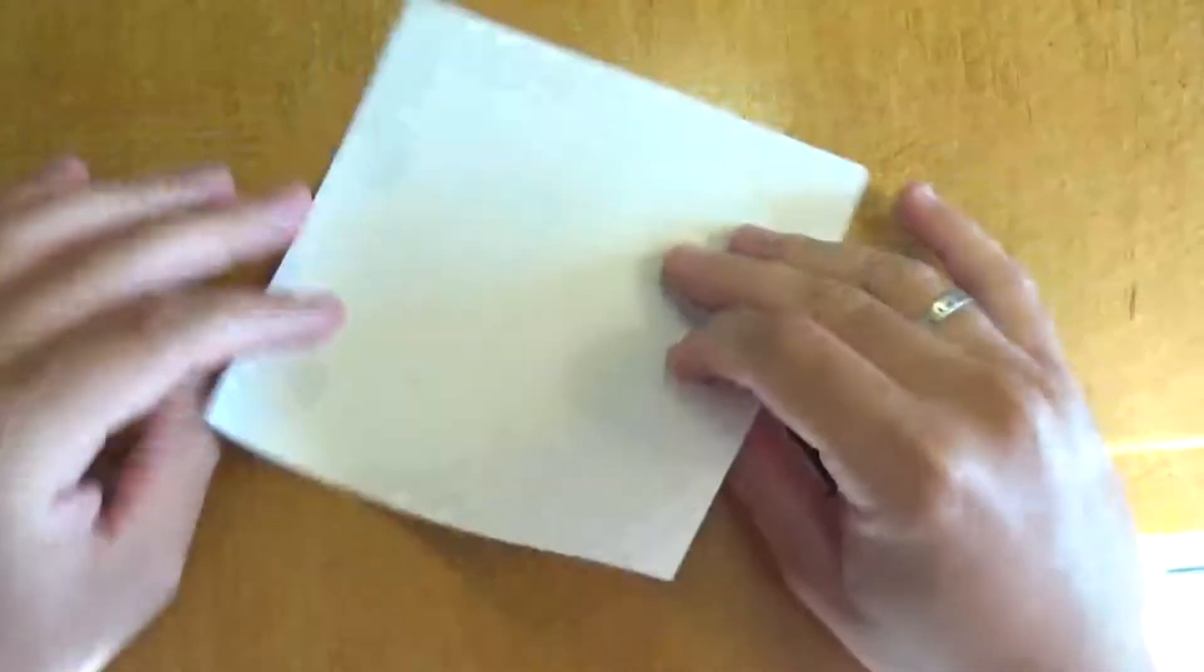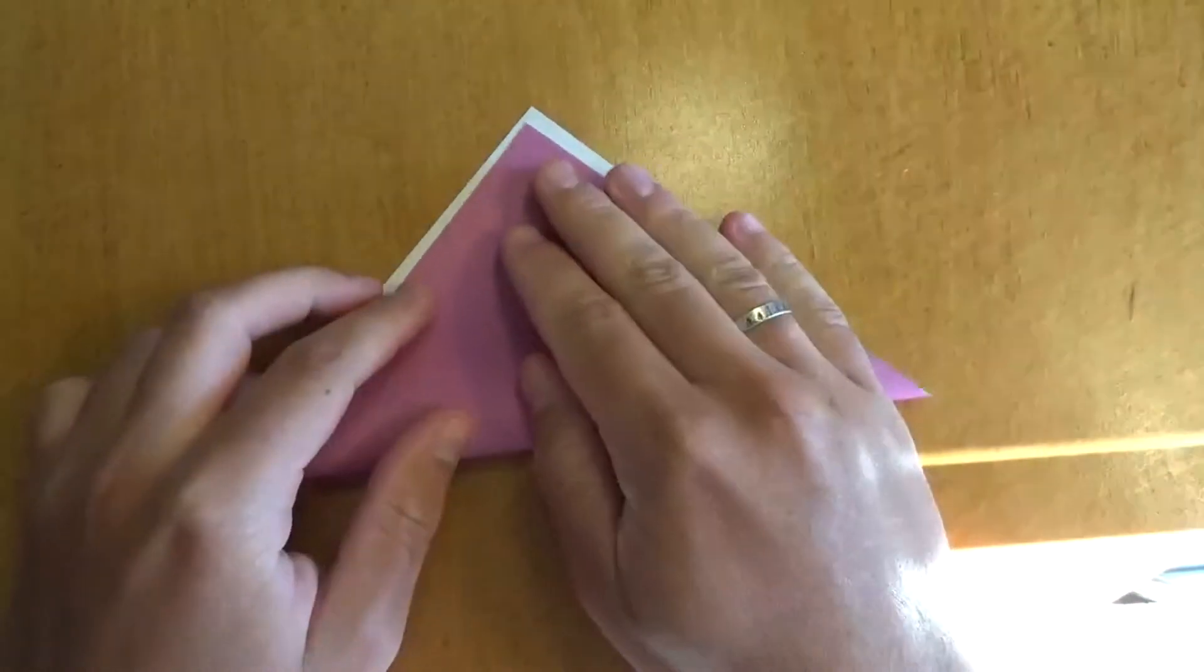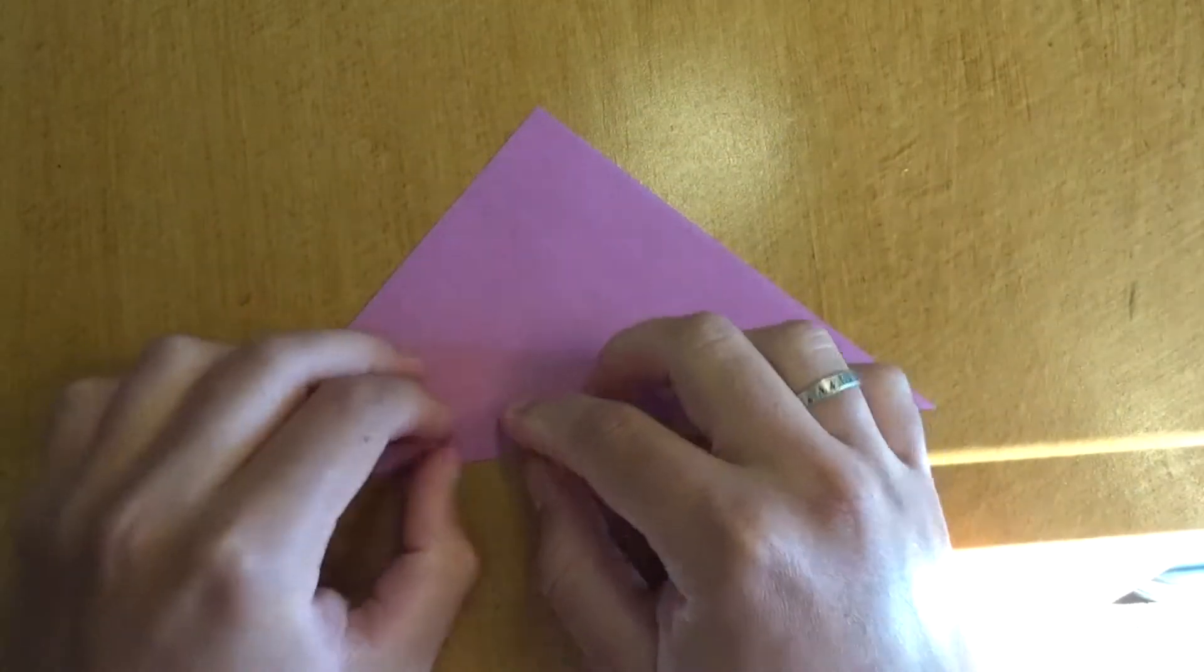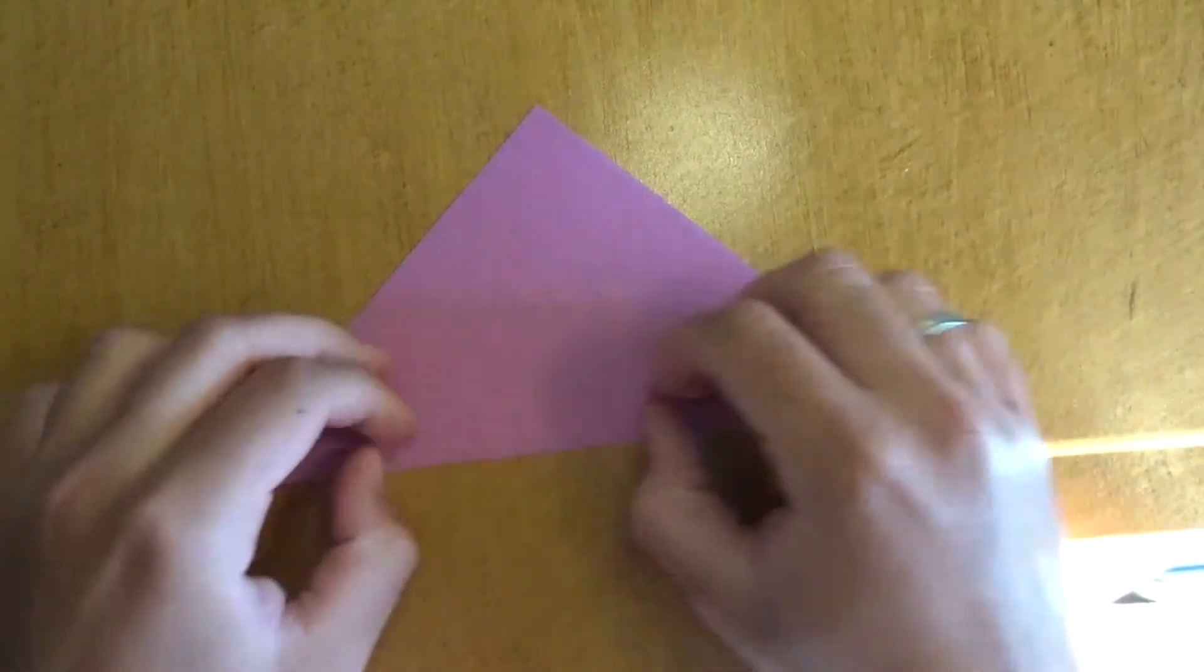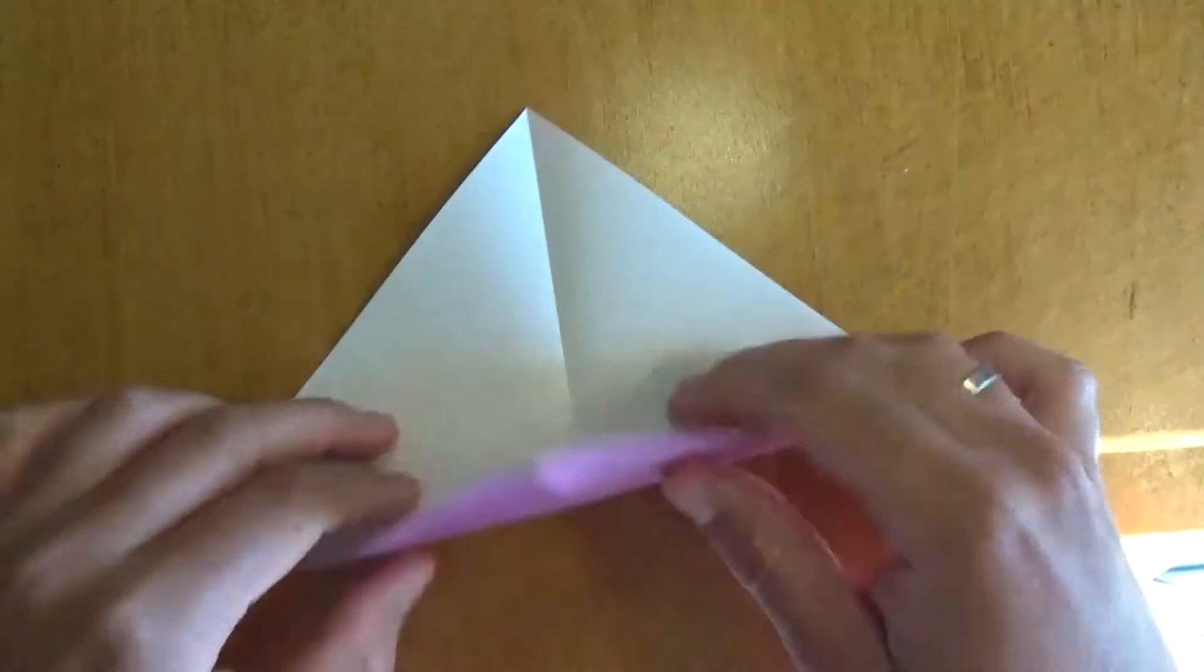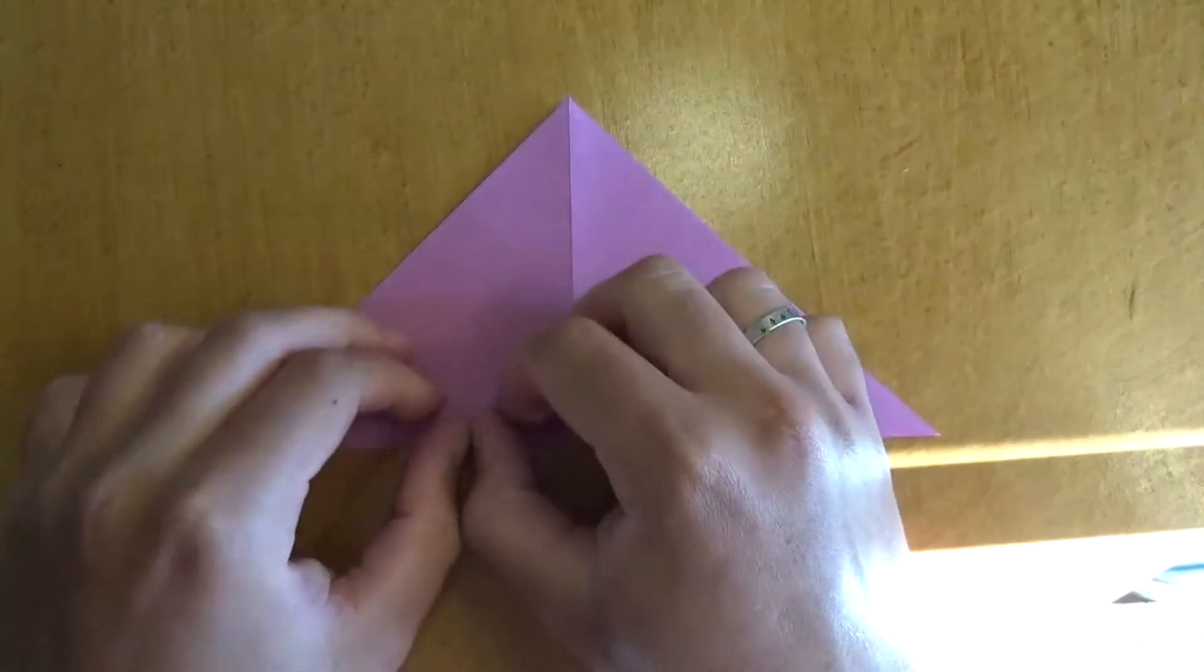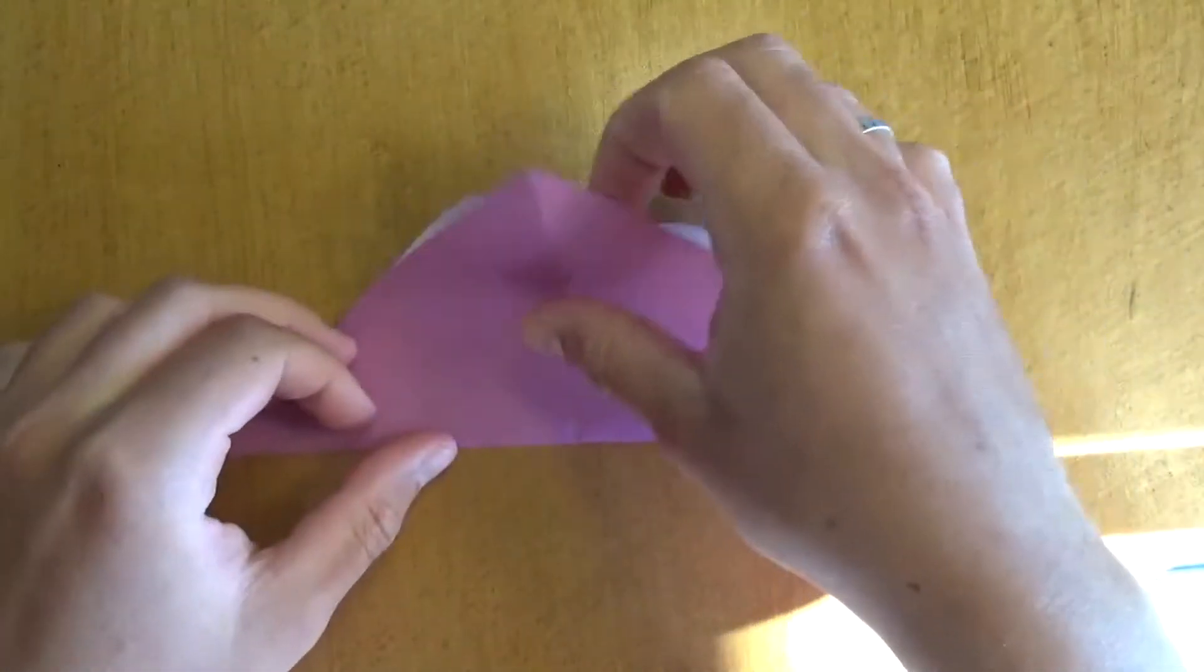So, let's begin white side up, and let's fold in half. Try to make very precise folds, and crease sharply. Okay, unfold, and fold in half this way. Okay, unfold.